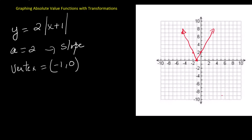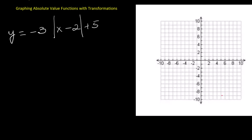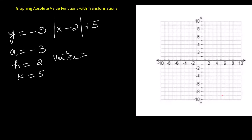Next, let's try a different example: negative 3 times the absolute value of x minus 2 plus 5. In this case, a equals negative 3, h equals 2, and k equals 5. That means the vertex is at 2 comma 5. The slope is negative 3, so the graph is very steep. The negative sign in front flips the V downward, reflecting it across the x-axis. From the vertex, move 1 unit to the right and go down 3 units to plot a point. Move 1 unit to the left and go down 3 units to plot a matching point.